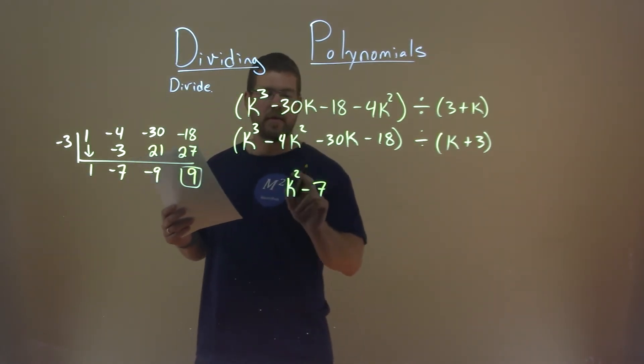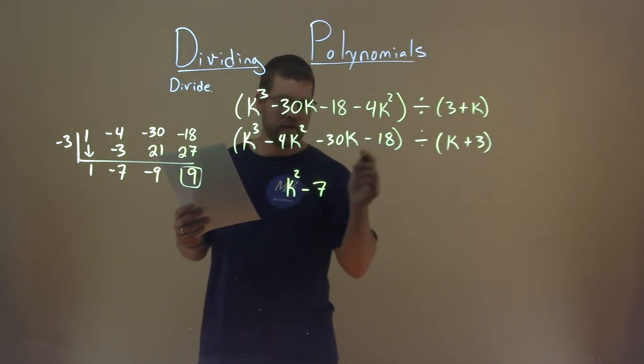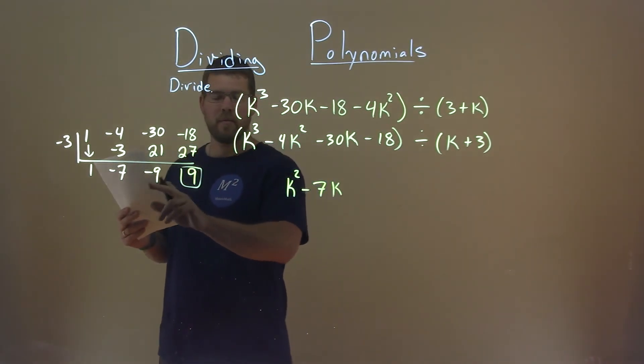We have a minus 7, and then k squared subtract the exponent by 1, we have a k. Then we have a minus 9 here.